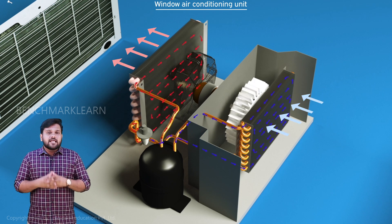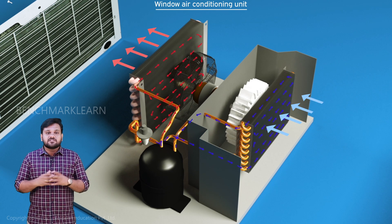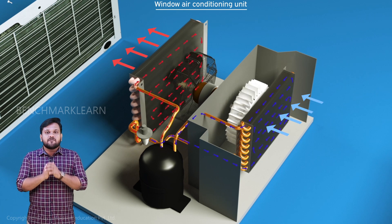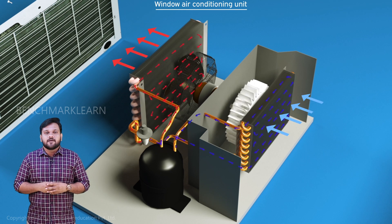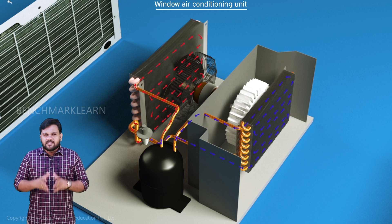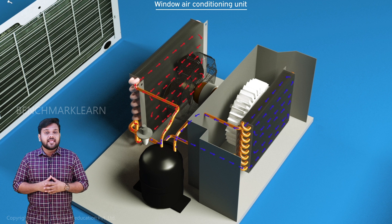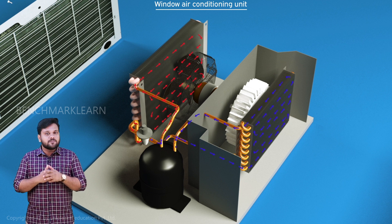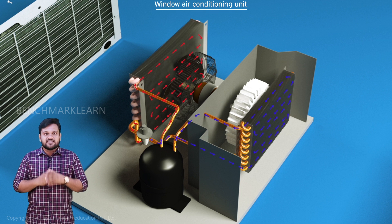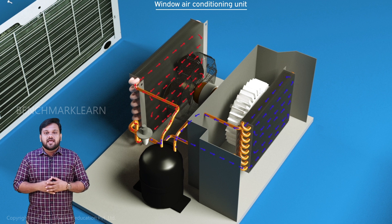Upon attaining the required comfort standard, the thermostat in the unit cuts off the power supply to the compressor and the cooling process stops. The fan continues to recirculate the air inside the room. When the temperature again falls below the preset value, the thermostat reconnects the power supply to the compressor and the cooling process starts again.